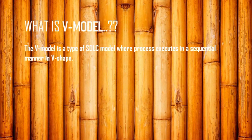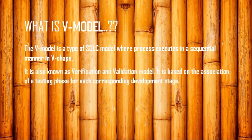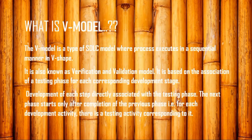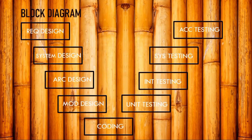The verification model explains in detail how the project is designed, coded, and tested in each and every single phase. It is also known as the verification and validation model, and it is based on the association of a testing phase for each corresponding development stage. Each stage directly associates a testing phase, and the next phase starts only after completion of the previous phase — for each development activity there is a corresponding testing activity.